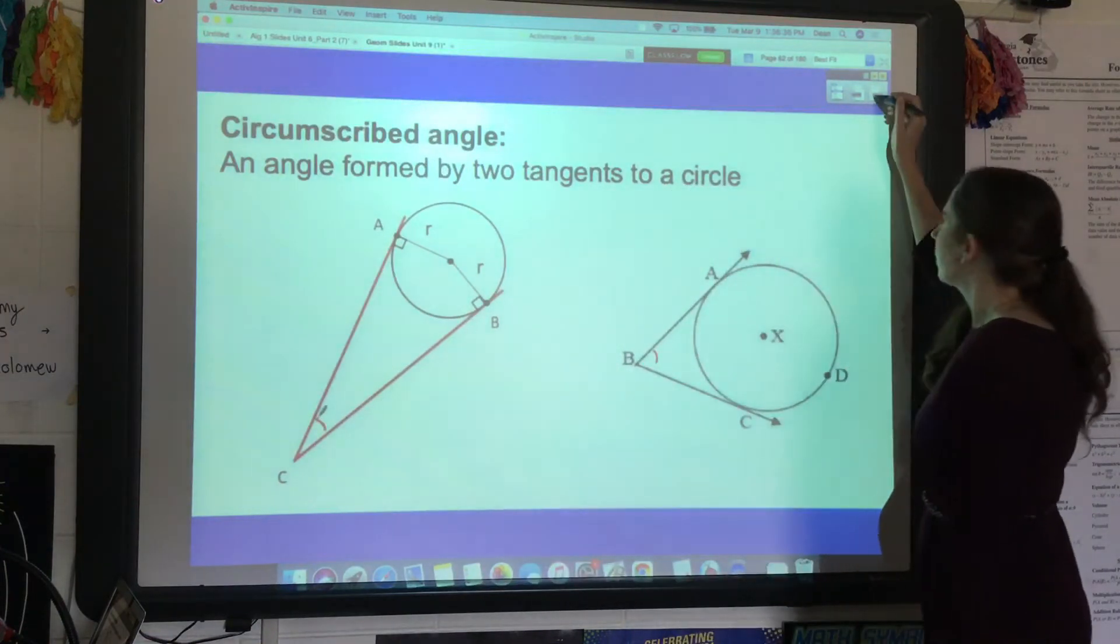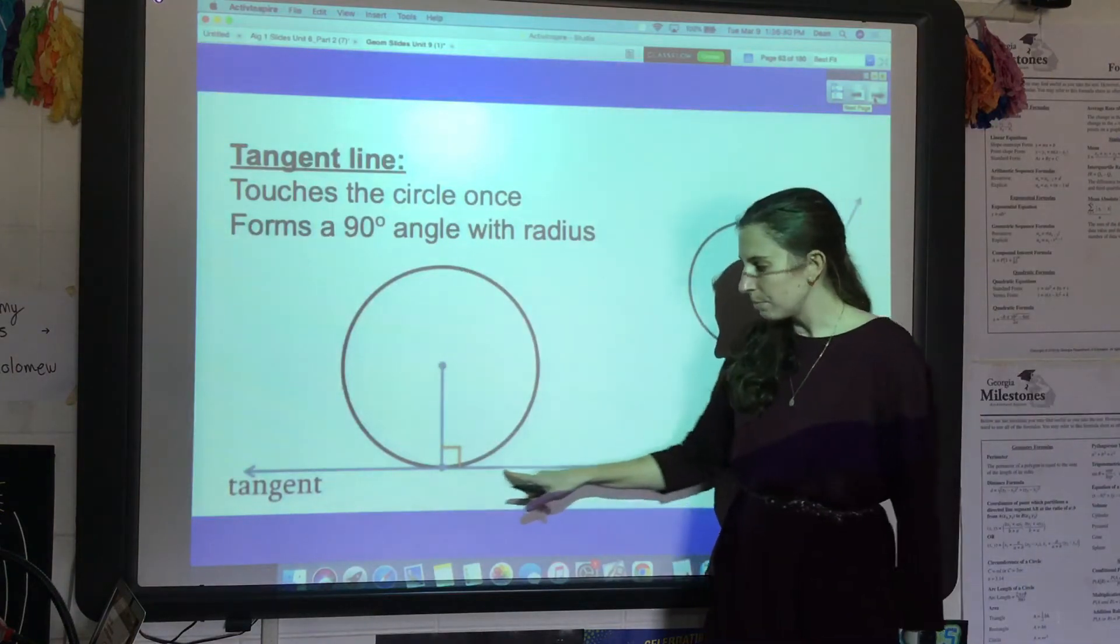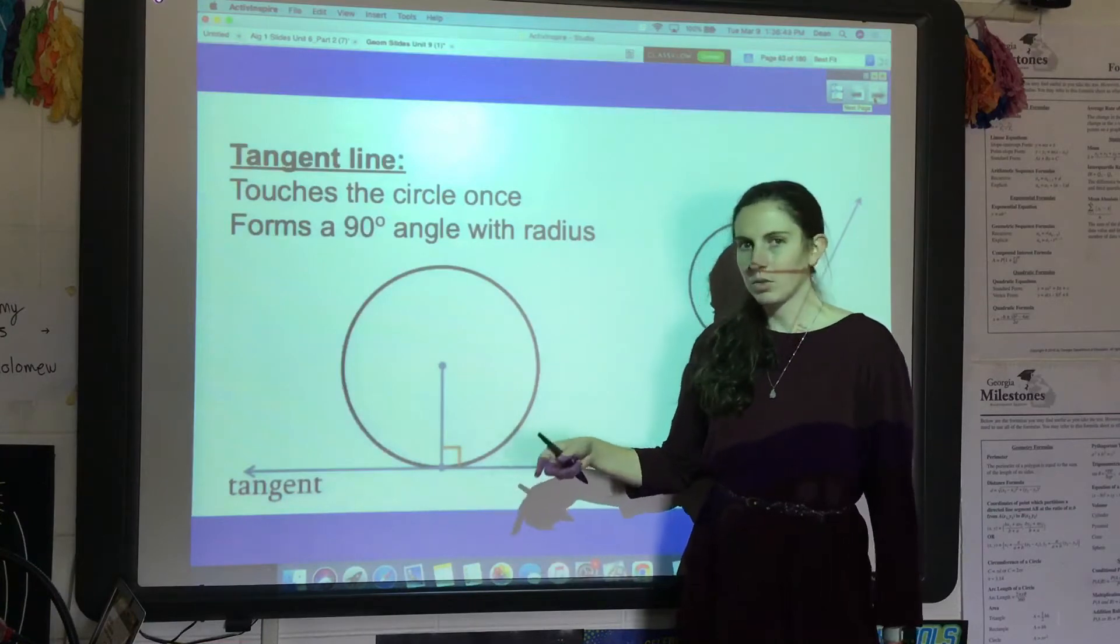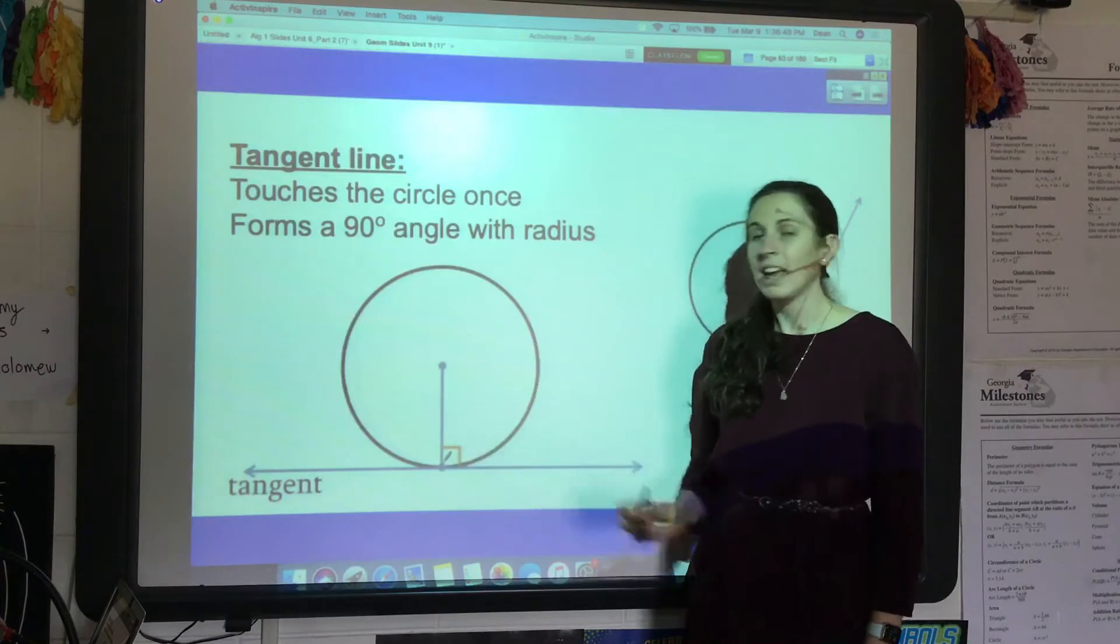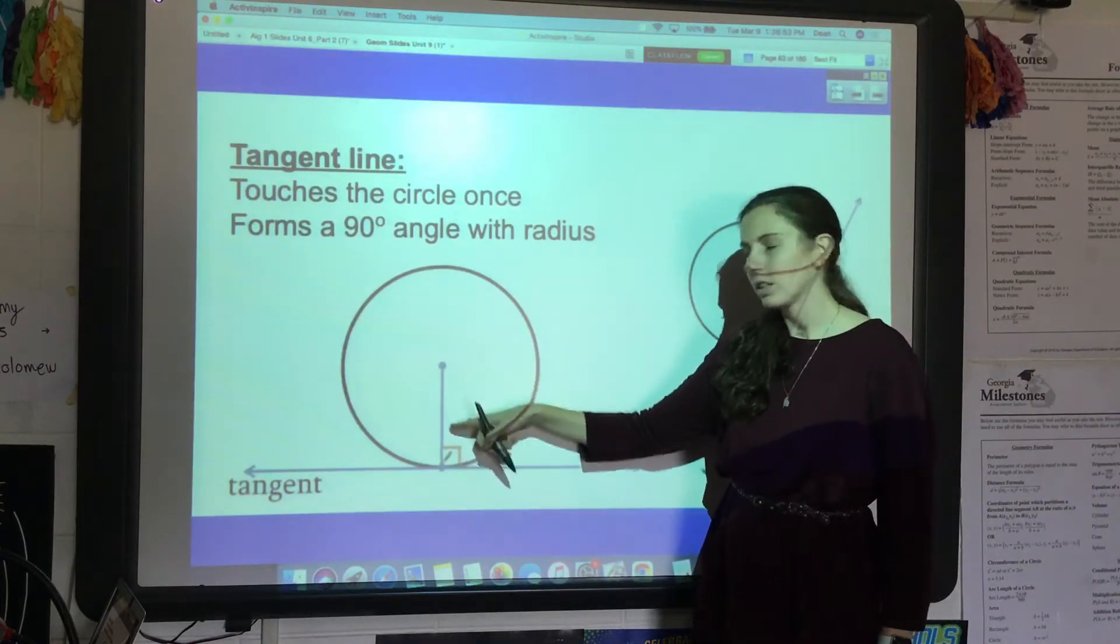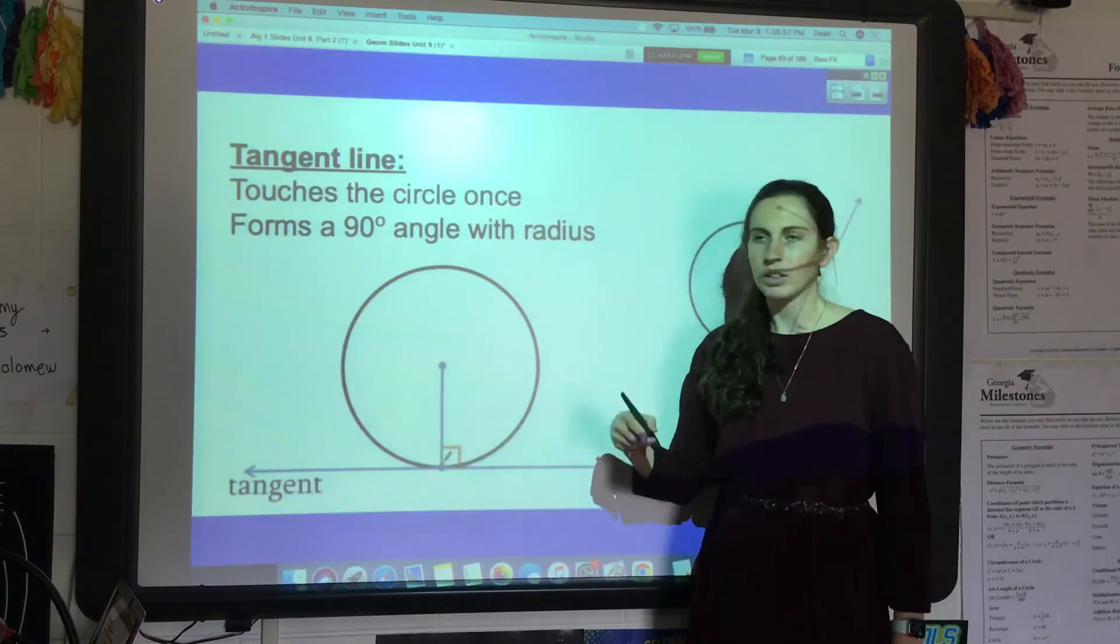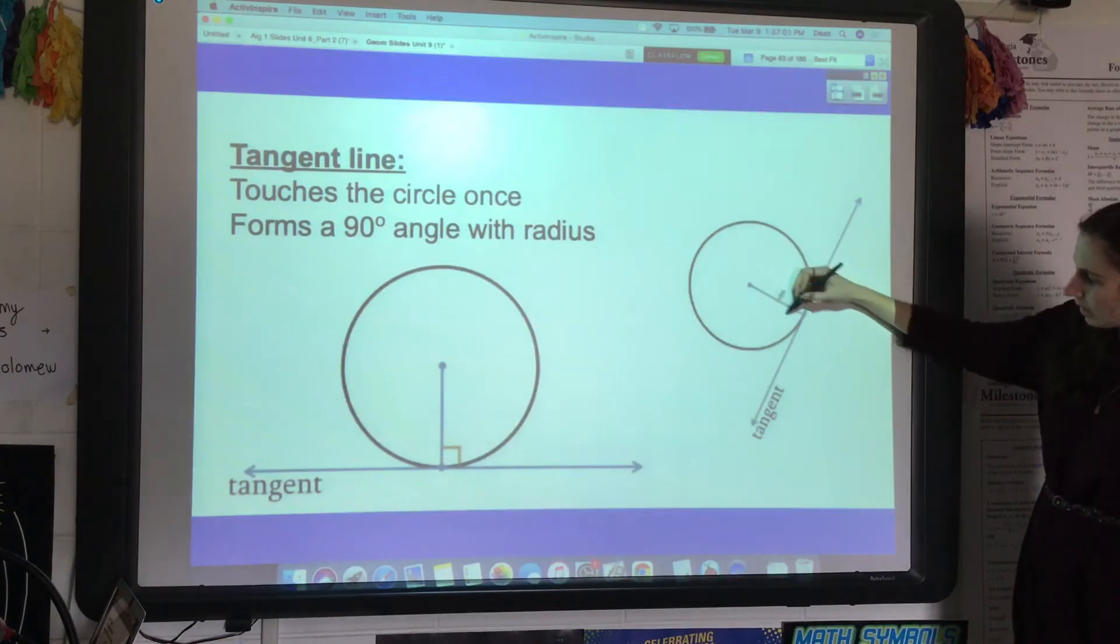Just as a reminder, tangent lines are lines that barely touch the circle once and then go on their way. Tangent comes from the Latin word tangere, which means to touch. So it touches at one point and forms a 90-degree angle with one of the circle's radii. That would be a 90-degree angle right there, or if it's tangent right here, then it would be 90 degrees with that radius.